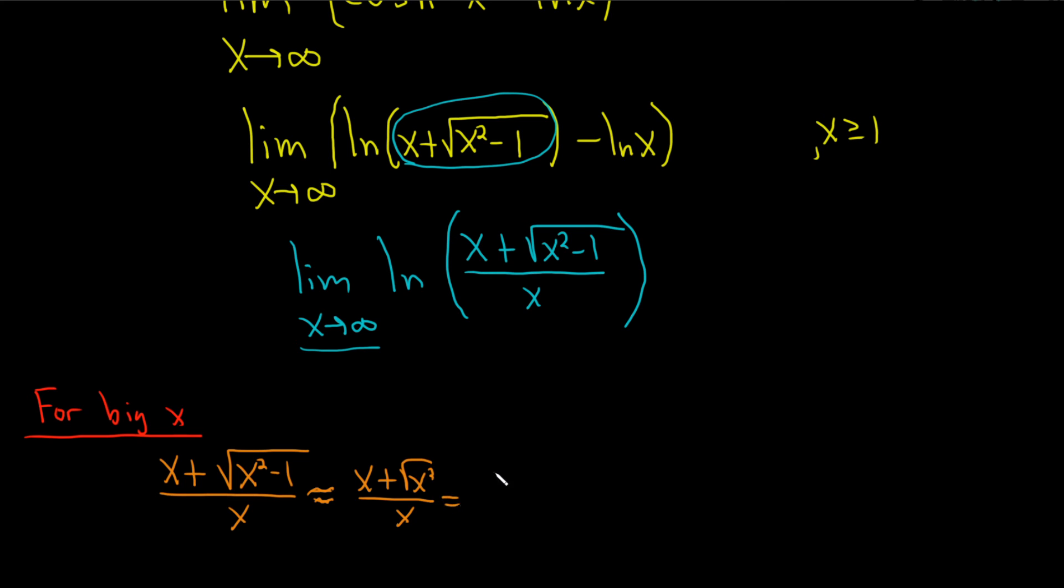And this is equal to x plus, well, the square root of x squared is the absolute value of x over x. But x is approaching infinity, so it's positive. So the absolute value of x is x. This is x plus x over x. This is 2x over x. This is 2.